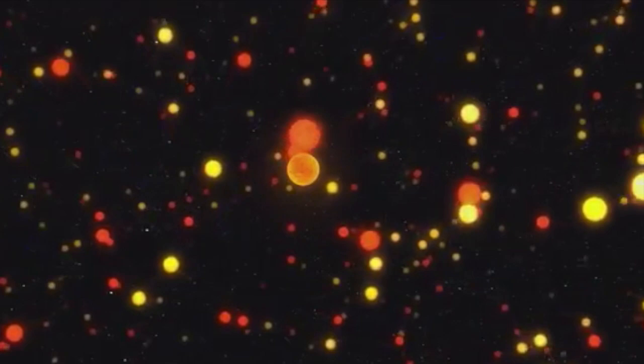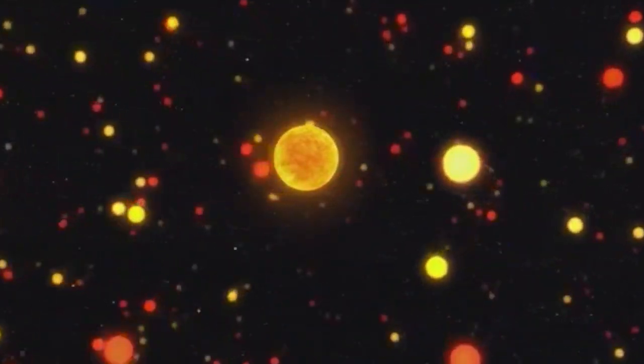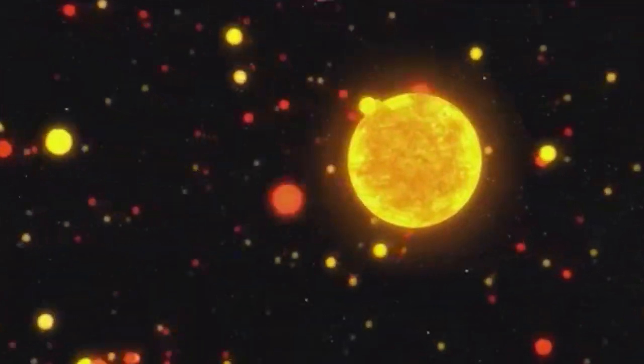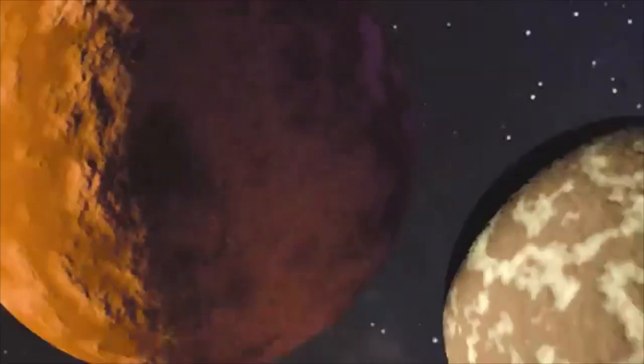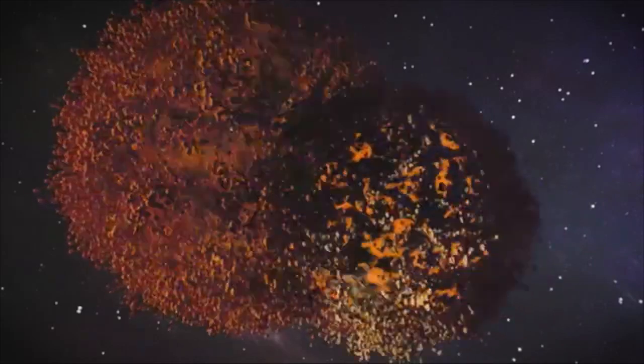Mercury's interior is similar to Earth's, in the way that they both have a crust, mantle and core. But there are also differences in their interiors. Mercury's surface is similar to our Moon, because it has the same flat terrain and is filled with craters. But Mercury's interior is more similar to Earth's than the Moon's.